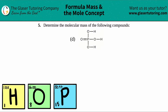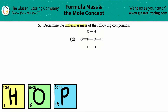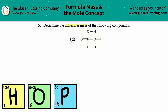Number five: determine the molecular mass of the following compounds — letter D. We need to find out what the molecular mass is of this big compound. It would be much easier if they gave us the chemical formula, so let's find out what it is.